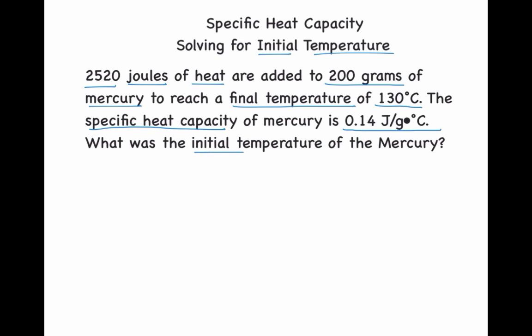What was the initial temperature of the mercury? By looking at the data presented, we need to use the formula Q equals MC delta T. The thing that we need to realize here is that delta T can be broken down even further, and delta T can be represented as temperature final minus temperature initial.